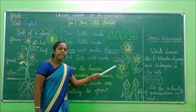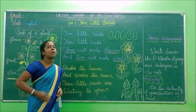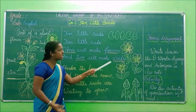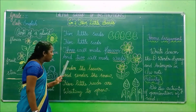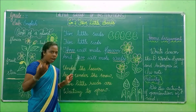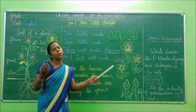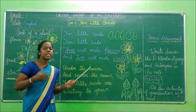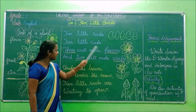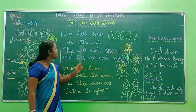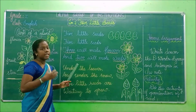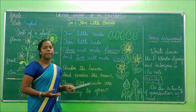And two will make weeds. Weeds means unwanted plants. The unwanted plants that grow in the pot are called weeds. So two will make weeds. There are five seeds: three will make flowers, and two will make weeds — those are the unwanted plants. Three seeds will be flowers, and two will be weeds.